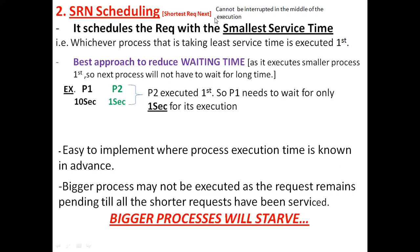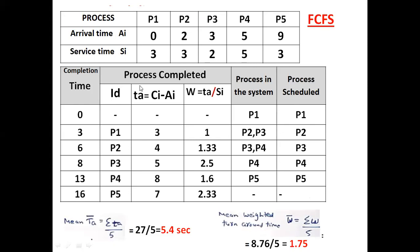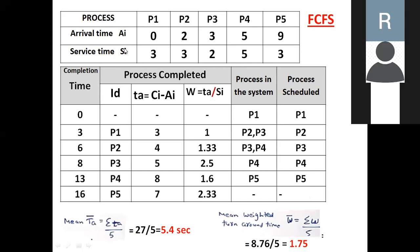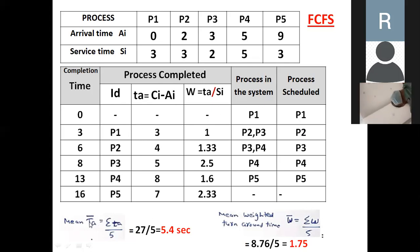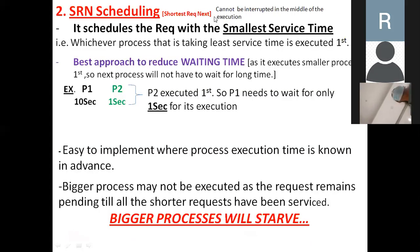In the last class we had seen FCFS. When solving problems on first come first serve CPU scheduling, we have a small table. For these many processes, we were given the arrival time AI and the service time SI. We need to construct this particular table — this will not be given in the examination. You have to construct it and fill the values of the process ID, turnaround time, weighted turnaround time, processes in the system, and the process being scheduled. Once you fill this table, you calculate the mean turnaround time TA bar and mean weighted turnaround time W bar.